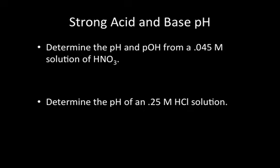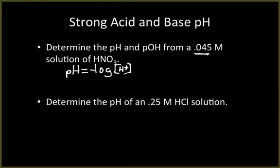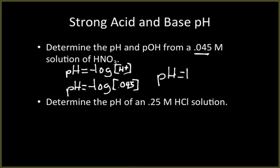Practice problem: determine the pH and pOH of a 0.045 M solution of HNO3. We know pH = negative log of H+, and since this is a strong acid, the acid concentration equals H+ concentration. So pH = negative log of 0.045. Plugging that into your calculator gives a pH of 1.35, which tells you that it is an acid.